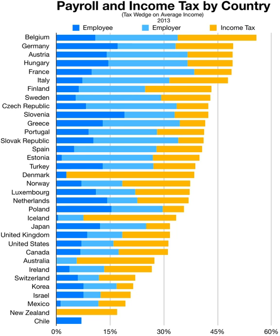Income taxes are used in most countries around the world. The tax systems vary greatly and can be progressive, proportional, or regressive, depending on the type of tax. Comparison of tax rates around the world is a difficult and somewhat subjective enterprise. Tax laws in most countries are extremely complex, and tax burden falls differently on different groups in each country and sub-national unit. Services provided by governments in return for taxation also vary, making comparisons all the more difficult. Countries that tax income generally use one of two systems: territorial or residential.